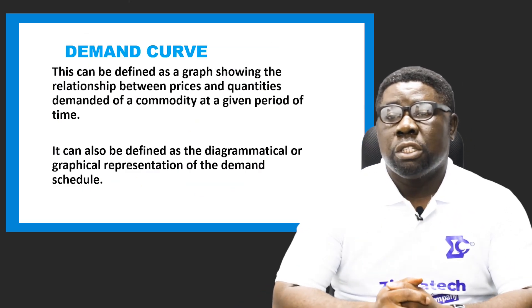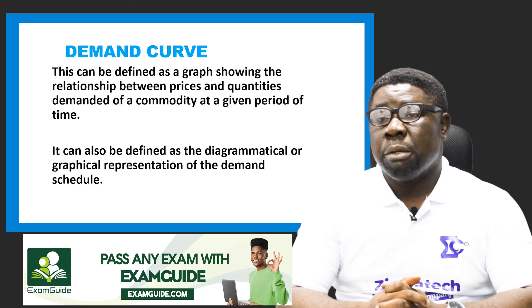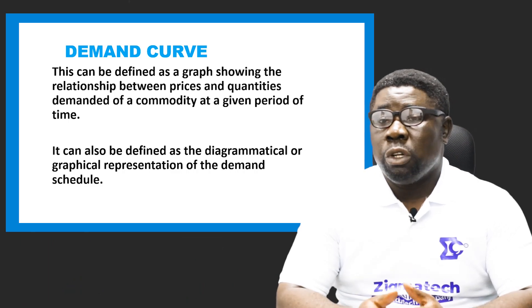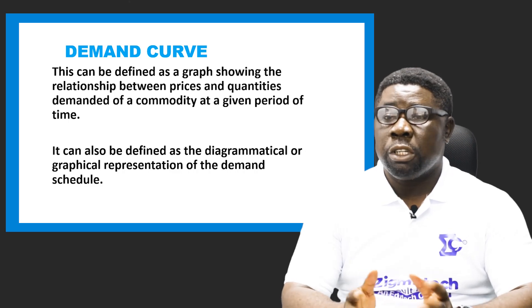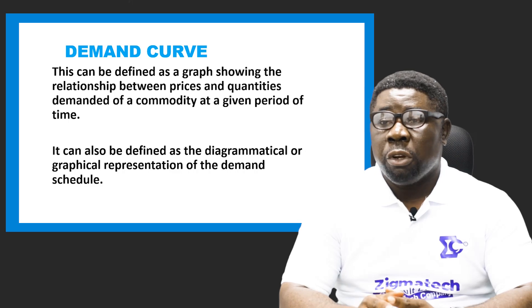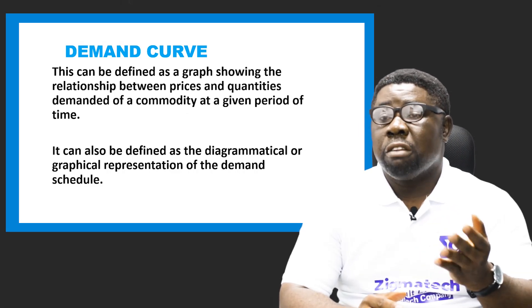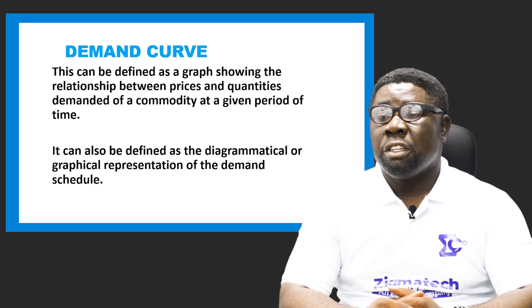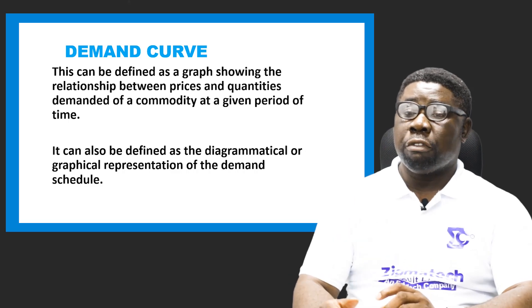Now we look at the demand curve. From the demand schedule you can draw a curve — without the demand schedule you cannot have a curve. The demand curve can be defined as a graph showing the relationship between prices and quantities demanded of a commodity at a given period of time. As price rises, what is the reaction of demand? As price falls, what is the reaction of demand? On the graph you will see it in pictorial format. It is a diagrammatical representation of the demand schedule.